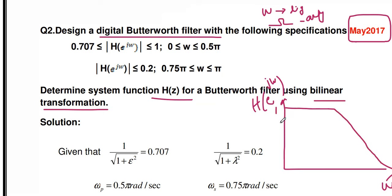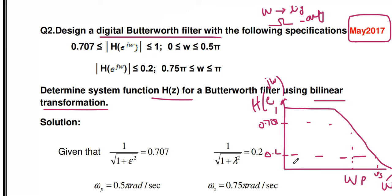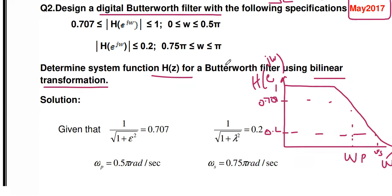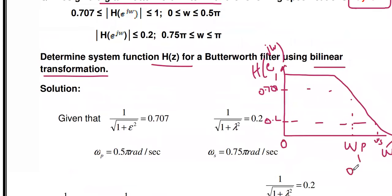The maximum value is 1, and at 0.707 we get the pass band frequency ωp. Since all frequencies are given in digital frequency, ωp corresponds to the point 0.707, and 0.2 corresponds to the stop band. The pass band frequency ωp = 0.5π — from 0 to π/2 it is the pass band. The stop band frequency ωs = 0.75π, where the magnitude is reduced to 0.2.